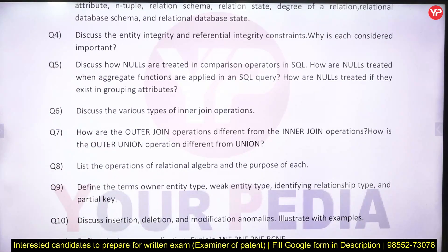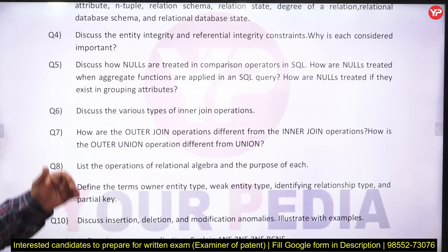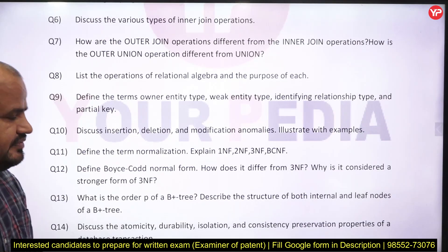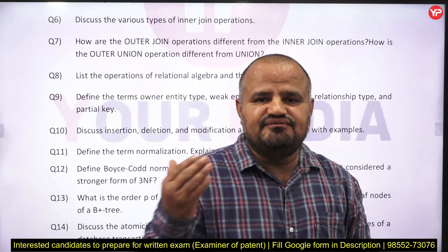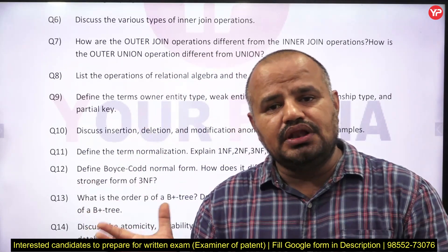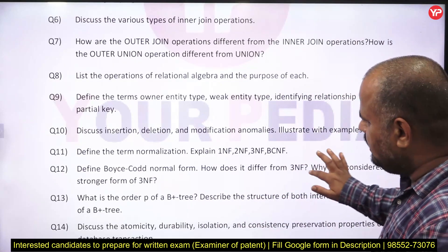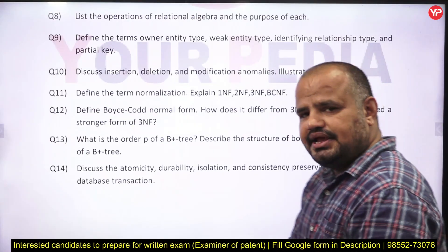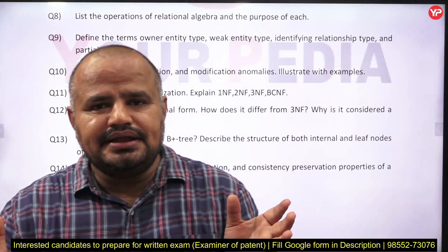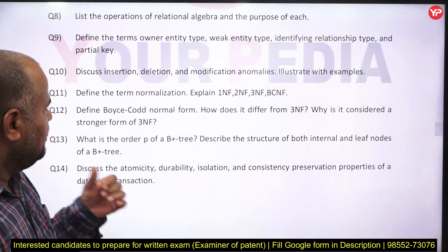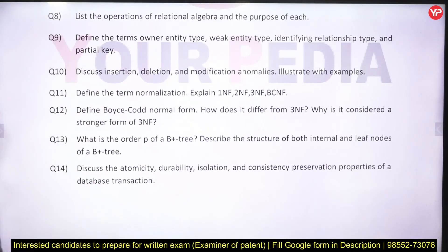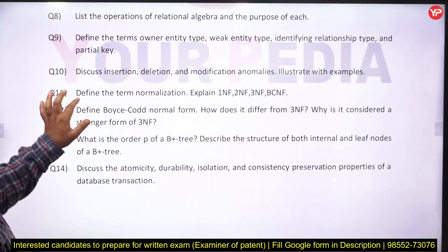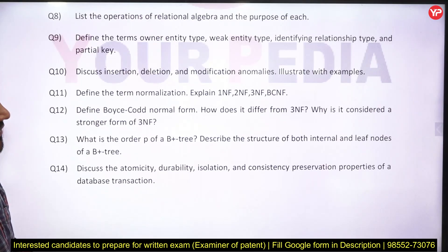Next is different types of inner join as well as outer join, and what is the difference between outer join and inner join. Next, they may ask you to list operations — please define five different operations of SQL or relational algebra. Next, discuss insertion, deletion and modification anomalies. We know that if we merge two or more independent tables into a single table, then sometimes we may face problems of insertion, deletion and modification. He may ask you to define the term normalization and explain 1NF, 2NF, 3NF, and BCNF. This is a most important problem.